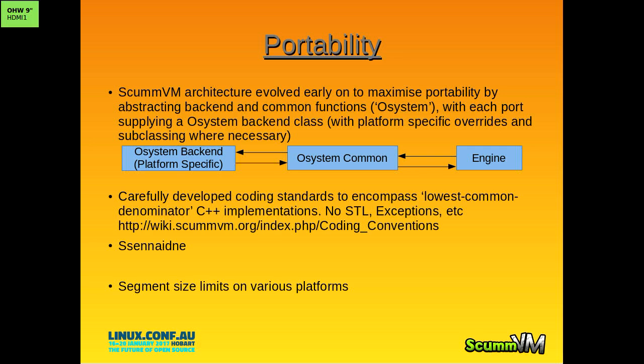Lowest common denominator C++ implementation - no standard library stuff. A compiler can compile code for anything, but STL needs a lot more and makes certain guesses about what's going to be on a platform, and a lot of embedded platforms don't have that functionality. Ditto with exceptions - try/catch, forget about it.